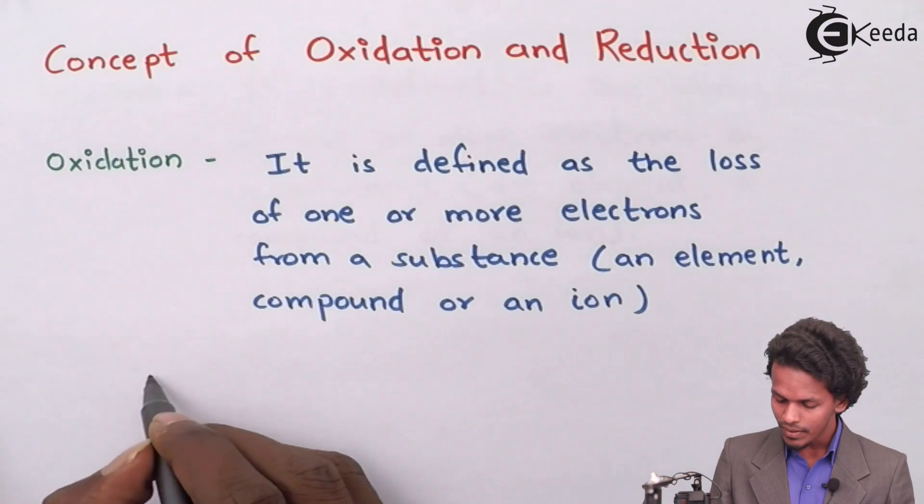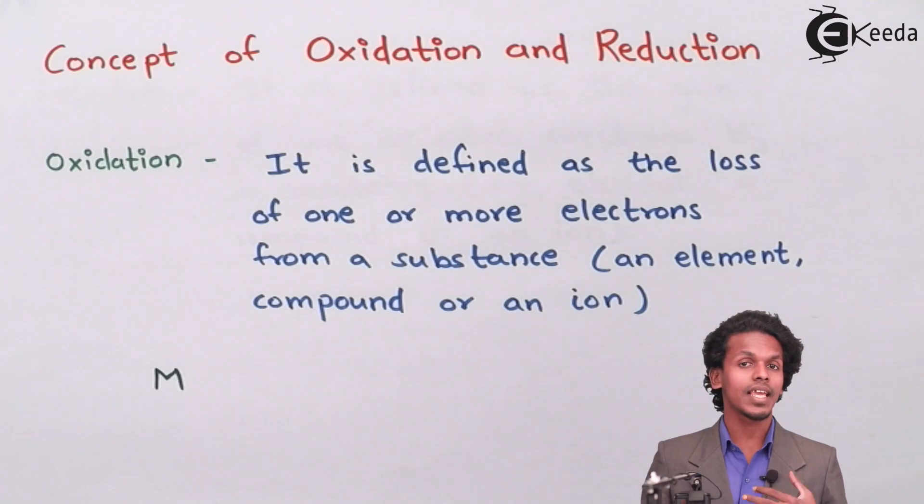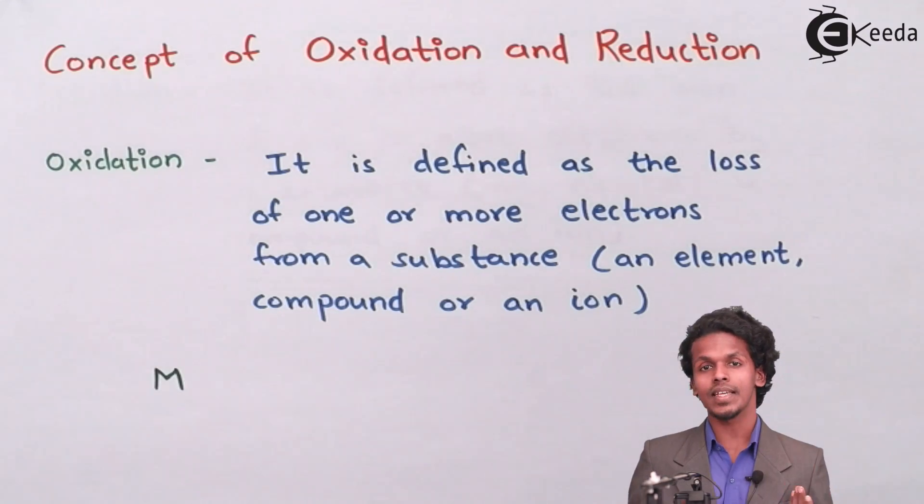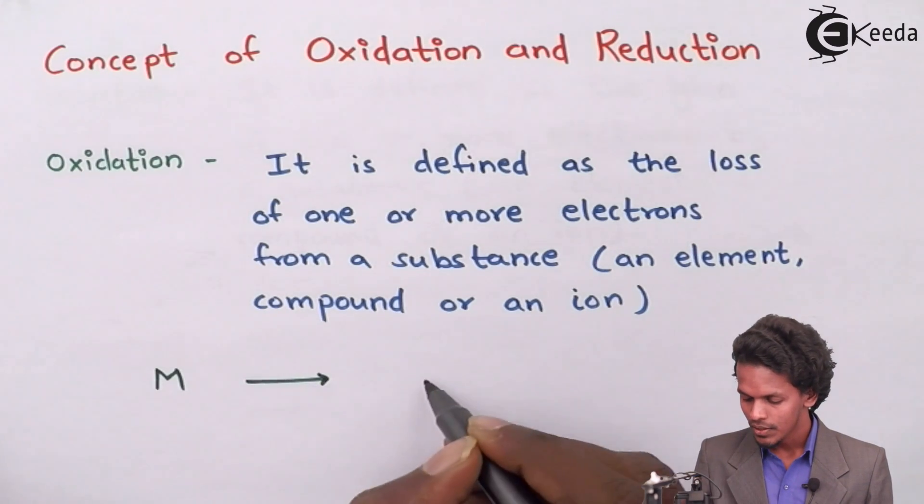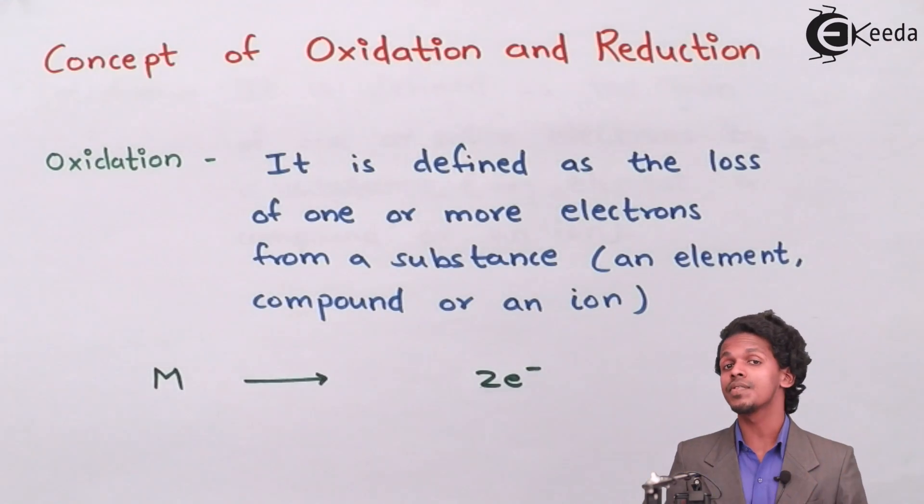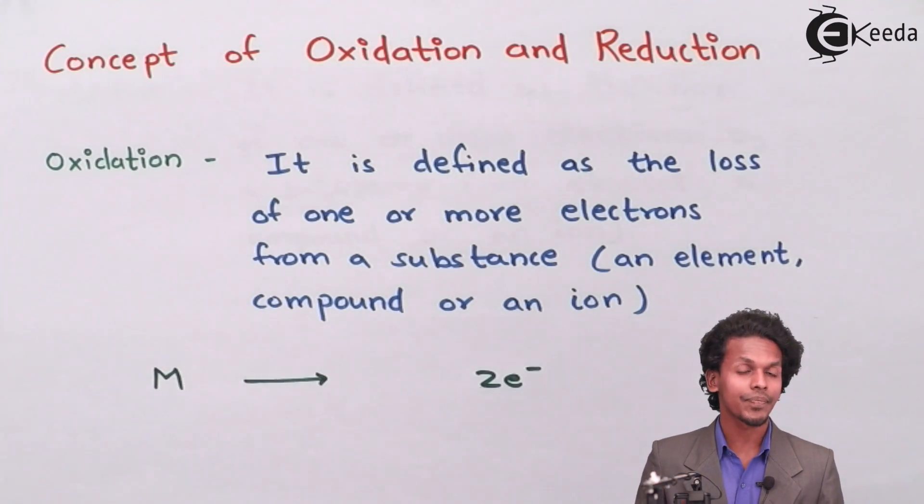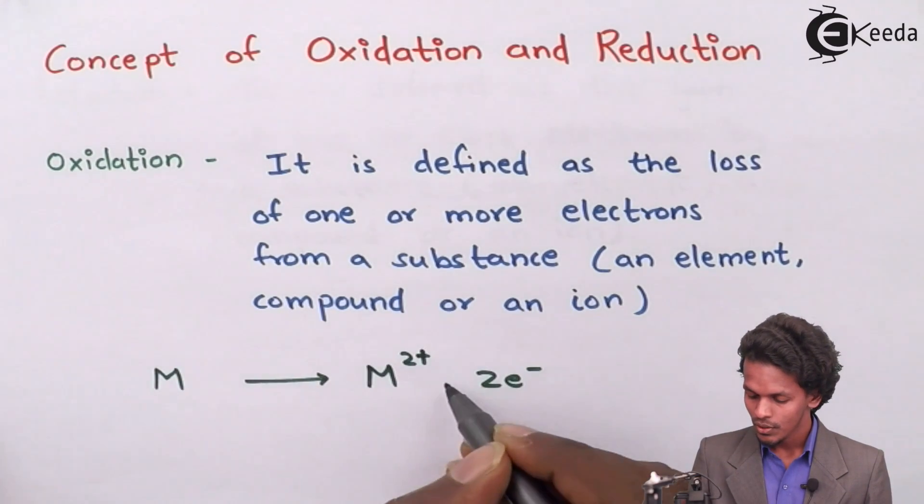Suppose I took a metal which is represented by M, and you know that metal has the capacity to lose electrons. So if metal loses electrons—suppose in this case the metal loses two electrons—then how many positive charges would be on the metal? Yes, it would be two plus.